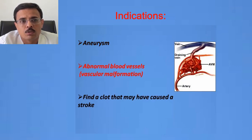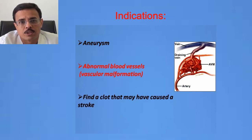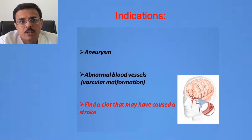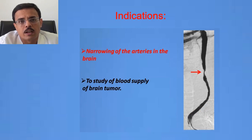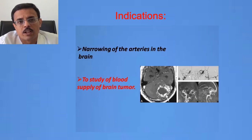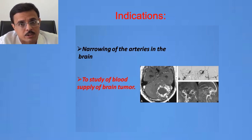Angiography is also done to look for bunches of swollen abnormal blood vessels, which we call vascular malformations, which can again cause hemorrhage in the brain. It is also done during a stroke procedure to look for the clot that may have caused the stroke, and sometimes we can remove that clot to relieve the patient. It is also done to look for narrowings in the blood vessels of the brain, which we call stenosis, which can result in brain stroke, and to study the blood vessels of a brain tumor before surgery. Sometimes through angiography we also close the blood supply to a brain tumor so that the surgeon can operate upon it.